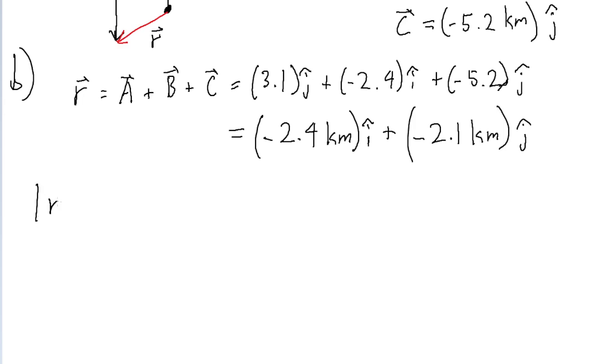If you want to actually find the magnitude of this vector, we're going to need to use the Pythagorean theorem. We're going to need to take the square root of the sum of the squares of the components. So that's the square root of negative 2.4 kilometers squared plus negative 2.1 kilometers squared. And if we put that into a calculator, then we find a resultant vector with a magnitude of about 3.2 kilometers.